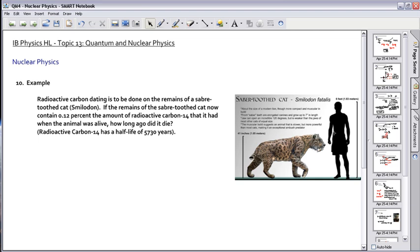The question is, if the remains of a saber-toothed cat now contain 0.12% the amount of radioactive carbon-14 that it had when the animal was alive, how long ago did it die? This is something that's very often used, this idea of carbon dating.